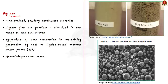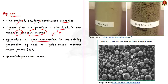So what is fly ash? Fly ash is a fine-grained, powdery particulate matter or a lighter, fine ash particle. It consists of silt-sized particles which are generally spherical. The particle size ranges from 10 to 100 micron, which is 10 to the power minus 6 meters. Fly ash is the by-product produced by the coal combustion for the generation of electricity in thermal power plants. It is generated by the coal or lignite based thermal power plants. Note that fly ash is also a non-biodegradable waste.